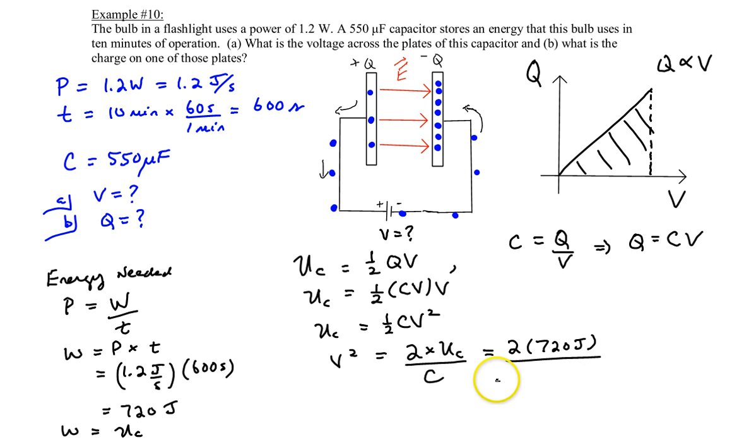We need to convert this to farads. So it's 550 times 10 to the power of negative 6 farads. That's what microfarad. Remember that a microfarad is equivalent to 1 times 10 to the power of negative 6 farads. And we have microfarads on the bottom there.